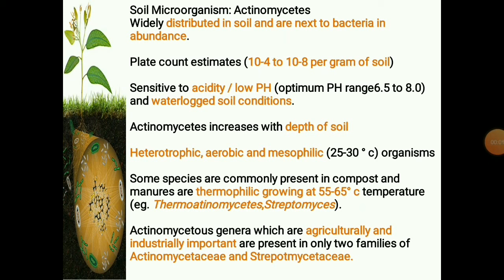The next soil microorganism is actinomycetes. They are numerous and widely distributed in soil, and are next to bacteria in abundance. They are also widely distributed in compost. Plate count estimates give values ranging from 10⁴ to 10⁸ per gram of soil. They are sensitive to acidity, low pH, and waterlogged soil conditions. The population of actinomycetes increases with depth of soil. They are heterotrophic, aerobic, and mesophilic organisms, and some species are thermophilic, growing at 55 to 65 degrees Celsius.